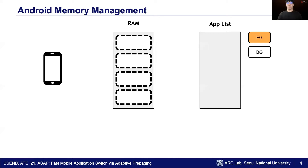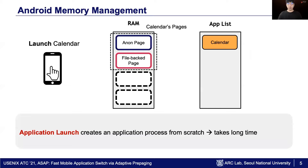To understand how memory pressure causes latency, let me explain an example of how Android, one of the most popular mobile operating systems, handles memory pressure. The figure shows the initial state of the system. When the user touches the calendar icon, Android creates the process of calendar from scratch and allocates pages of a calendar in memory. We call this initial launching process an application launch, which is known to cause long latency.